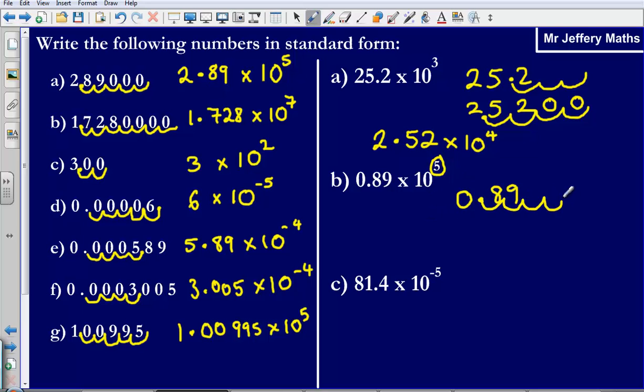So that's going to give me 8, 9 and then zeros in the gaps. So 89,000.